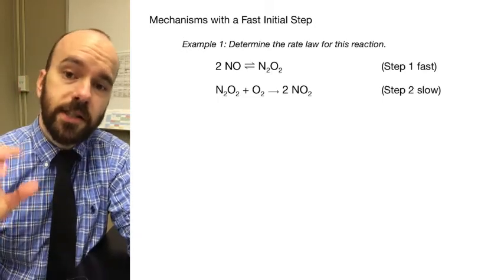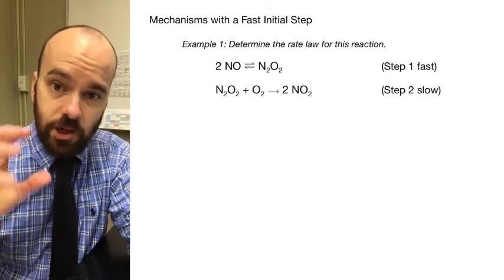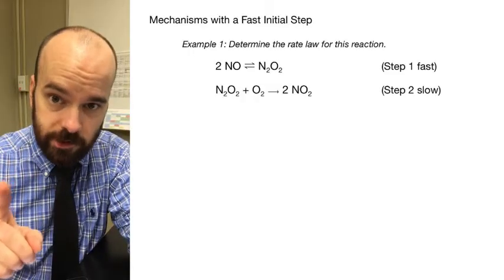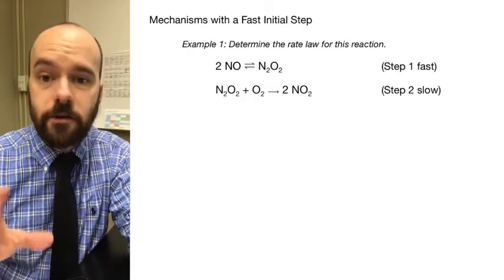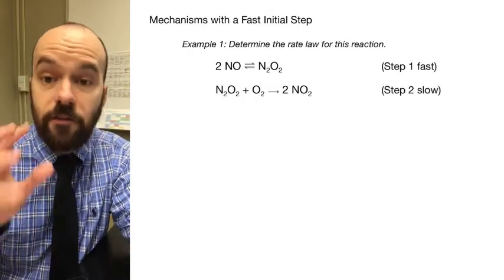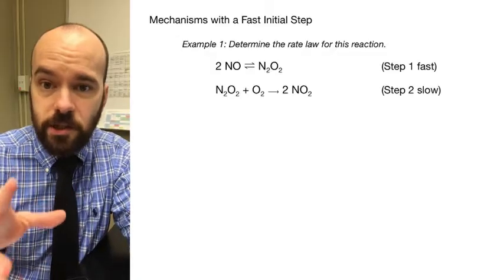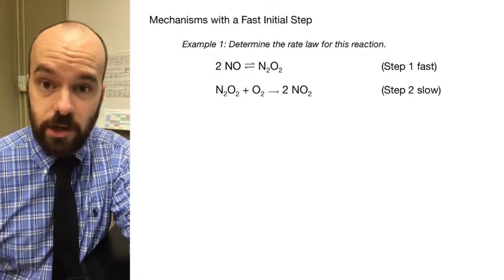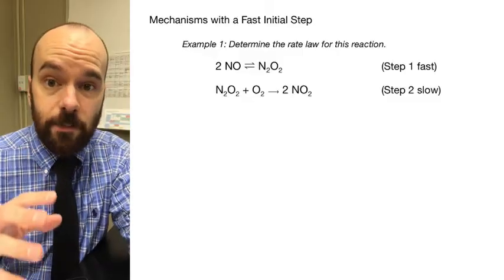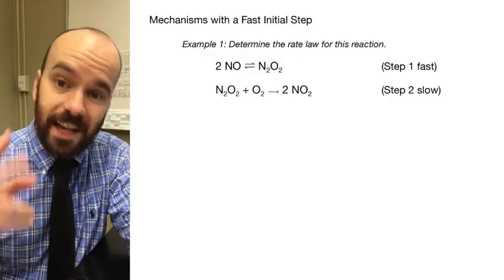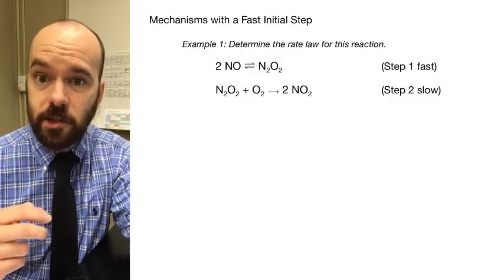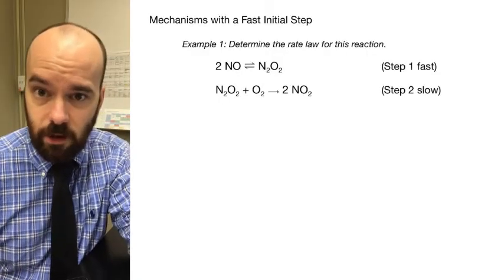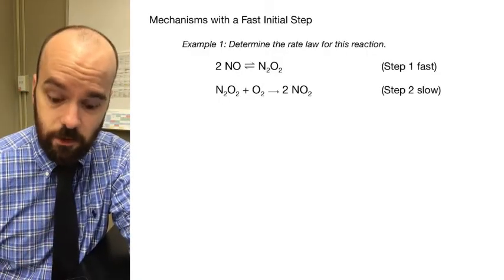In this video we're looking at how you can start with a reaction mechanism where the first step is a fast equilibrium step and determine the rate law for that reaction. If the first step is slow, we can just write the rate law based on that slow step, which is the rate determining step. But whenever the first step is a fast equilibrium step and the second step is the slow step, we have to do a few more things to write that rate law.